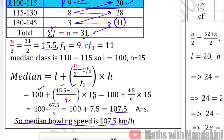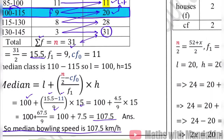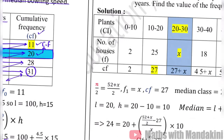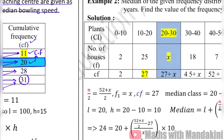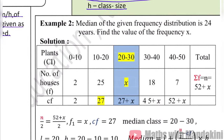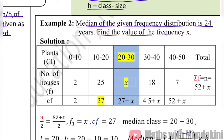Now, if we are given the median and a frequency is missing, what do we do? Let's see: the median of the given frequency distribution is 24 years. Find the value of the missing frequency x. So now we have to find x in the table.